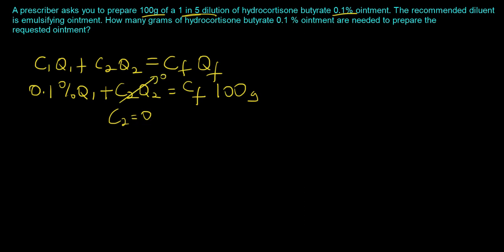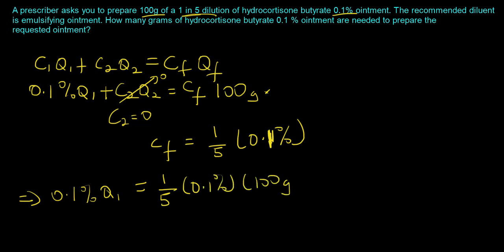Your Cf, which is the final concentration, is a 1 in 5 dilution, so that's basically 1/5 times 0.1%. You can rewrite that second statement as 0.1% of Q1 being equal to 1/5 times 0.1% times 100 grams. If you do that, you end up with Q1 being equal to 20 grams.